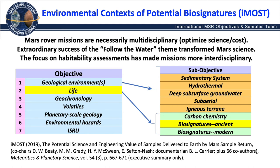Mars rover missions are necessarily multidisciplinary in nature, and that is to optimize the amount of science return against the cost. An important point is that the extraordinary success of the follow-the-water theme, which was addressed right around the year 2000 or so, really transformed Mars science. The focus on habitability assessments has made missions more interdisciplinary.